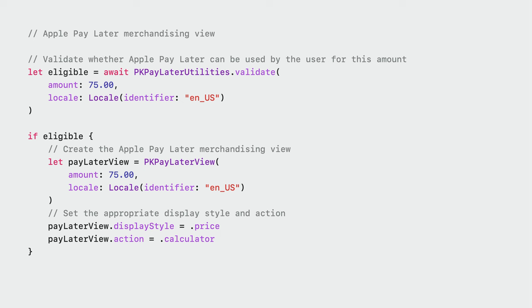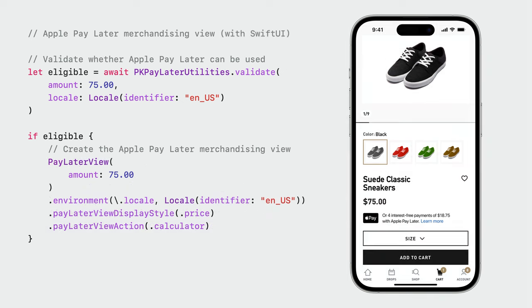Let's take a look at incorporating this view within your app. First, you'll want to check whether the user is eligible to use Apple Pay Later. You can use the validate function within PKPayLaterUtilities to do this, providing the amount for the transaction as well as the locale required. Once you've determined eligibility, you instantiate a PKPayLaterView with the same details. You can customize the style and action by changing their respective properties. We also provide a convenient SwiftUI view that allows you to express Apple Pay Later acceptance within your SwiftUI apps.